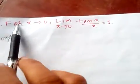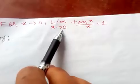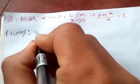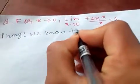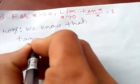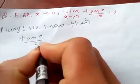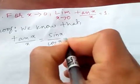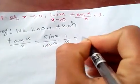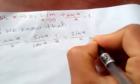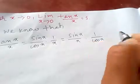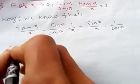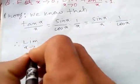Hello friends, today I'm going to prove that the limit as x tends to 0 of tan(x) by x is equal to 1. To prove this, we know that tan(x) by x is sin(x) by cos(x) into 1 by x, which equals sin(x) by x into 1 by cos(x).